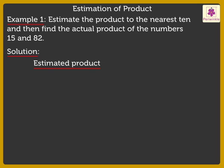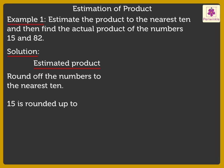Here, to estimate the product, firstly, we round off both numbers to the nearest 10. So, 15 is rounded up to 20 and 82 is rounded down to 80.